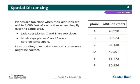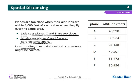Today we're going to talk about our cool down from yesterday — spatial distancing. Planes are too close when their altitudes are within a thousand feet of each other when they fly over the same area. Jada says planes C and E are too close. Noah says planes C and E are a safe distance apart. Use rounding to explain how both statements might be correct.